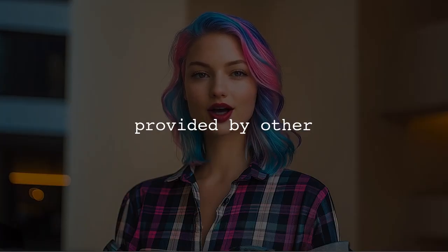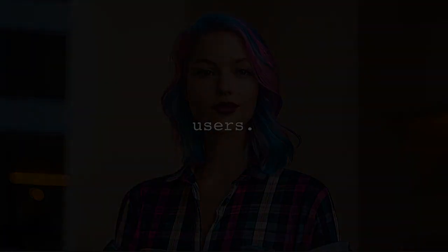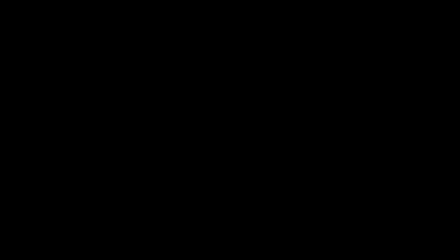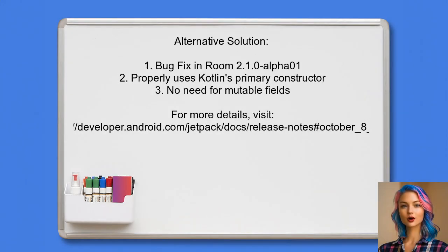Now let's look at the answers provided by other users. An alternative solution points out that this issue is actually a bug in the Room library, and it has been fixed in version 2.1.0-alpha-01. This update allows Room to properly utilize Kotlin's primary constructor in data classes, eliminating the need to declare fields as mutable.